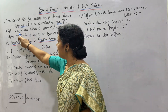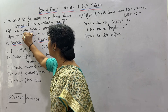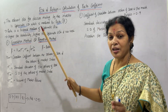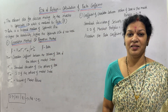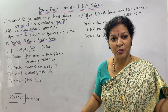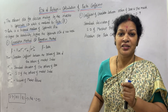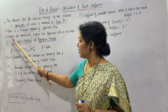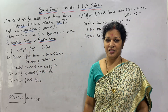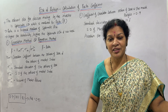Point number two: beta is a historical measure of systematic risk. We are calculating beta from the previous historical data. Present data we don't use; future data we don't know. So whatever previous data we are having, that we are going to use for measuring the systematic risk. Also remember: higher the variability, higher the systematic risk, and vice versa. Variability is more, risk is more. Variability is less, risk is less.